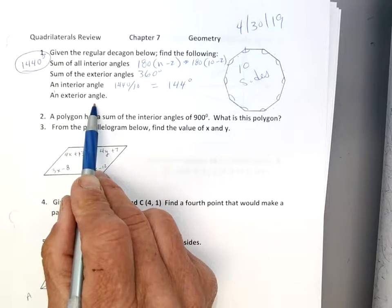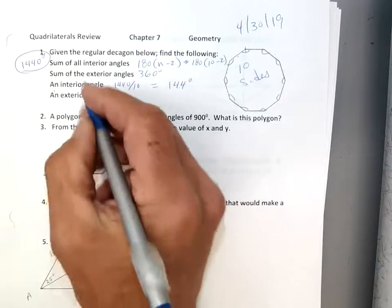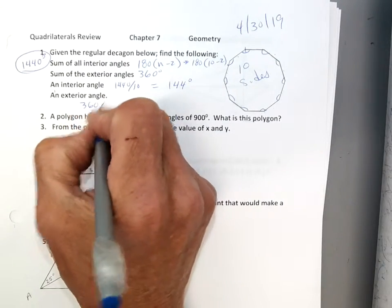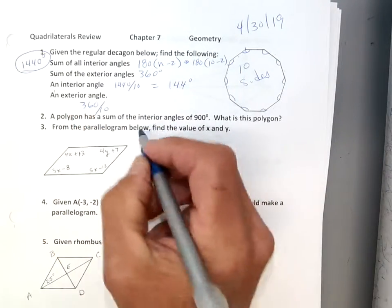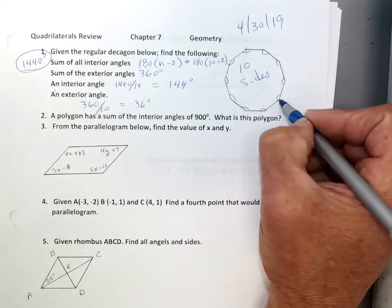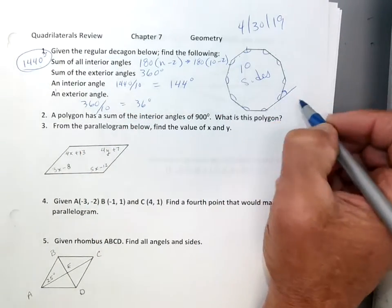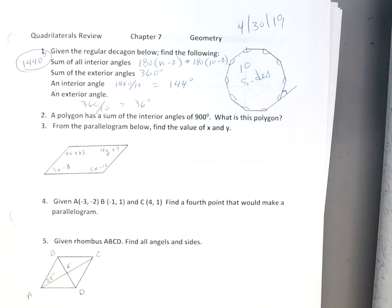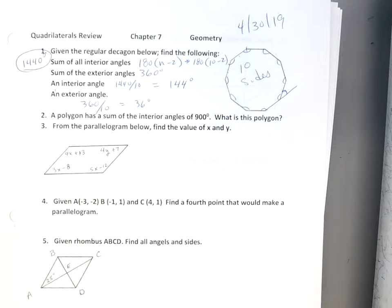Now, an individual exterior angle will take this answer of 360 and divide it by 10. Yeah, that's it. Just divide it by 10, which is going to be 36 degrees. Now, those are these angles right out here. That's an exterior angle, okay? Thumbs up? Okay, good.